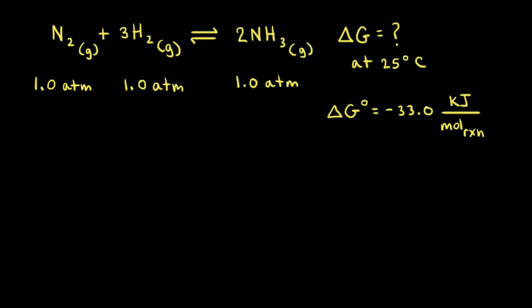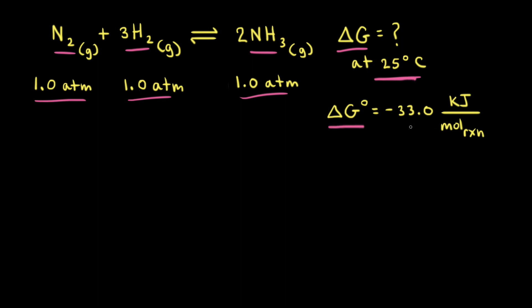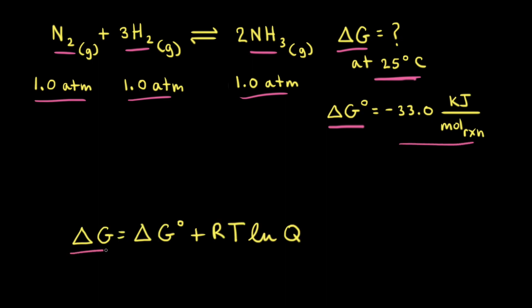Next, let's calculate delta G for a chemical reaction — the reaction for the synthesis of ammonia gas from nitrogen gas and hydrogen gas. Our goal is to calculate delta G at 25 degrees Celsius at the moment in time when the partial pressures of all three gases are one atmosphere: one atmosphere for nitrogen, for hydrogen, and for ammonia. At 25 degrees Celsius, delta G naught for this reaction is equal to negative 33.0 kilojoules per mole of reaction. We need to figure out what Q is at this moment in time.